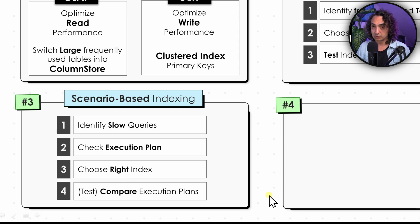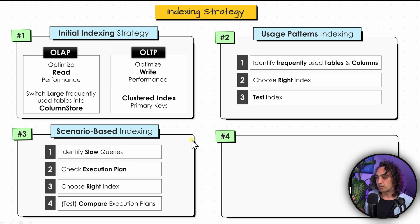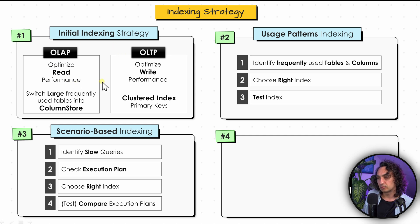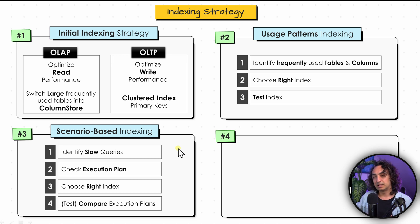If you see no benefit from the new index, something is wrong — investigate more, analyze the execution plan further, and choose a better index approach. Do this for each slow query until all queries are fast. Keep in mind that indexing is not the only method to optimize query speed. As you can see through these three phases, we moved from generic methods to something very specific and scenario-based, doing a deeper dive into the project with each phase.